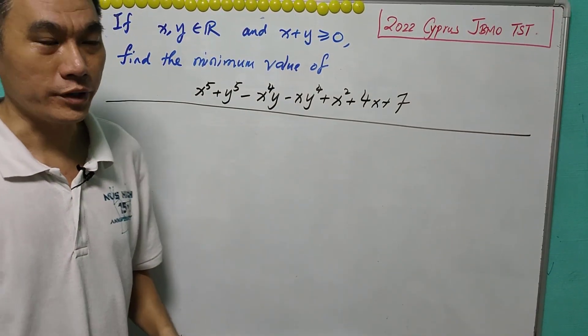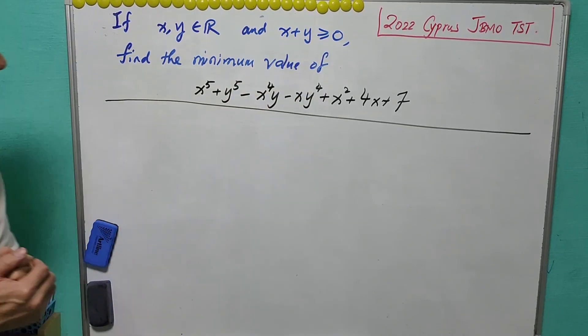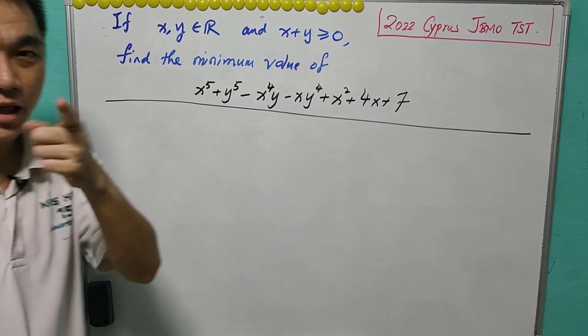Welcome to another math prompt of the week. Real numbers with sum at least zero, minimum value. Let's talk about it.